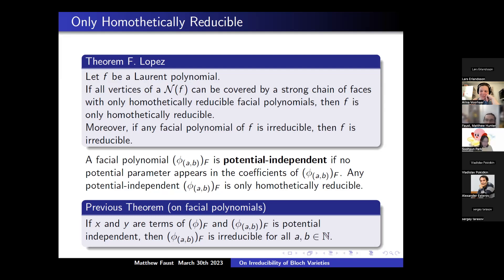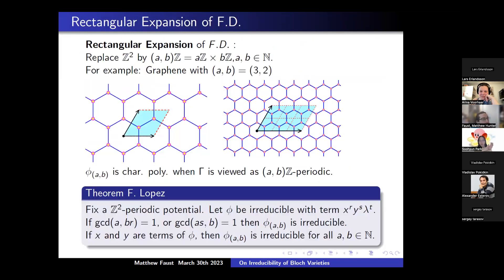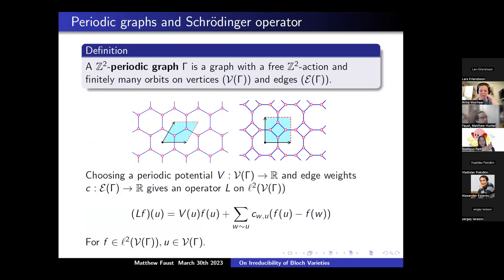Another question: does the Schrödinger operator on a Z²-periodic graph specialize to a graph Laplacian? Yes — if you choose edge weight C equal to one for every edge and make your potential zero, that's just the standard graph Laplacian. A follow-up question about generalizations for chip-firing — I'm actually not familiar with that, so I can't speak to it.